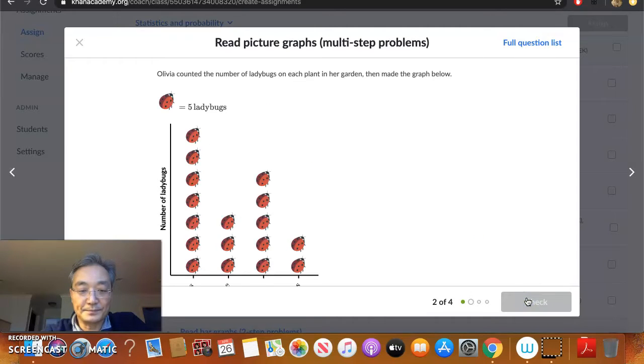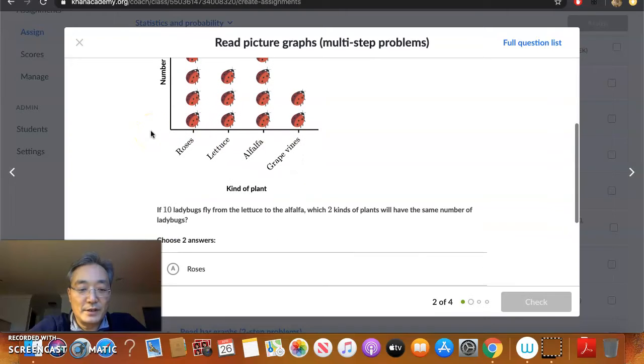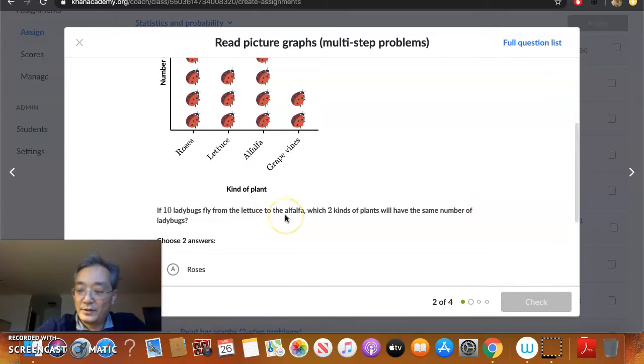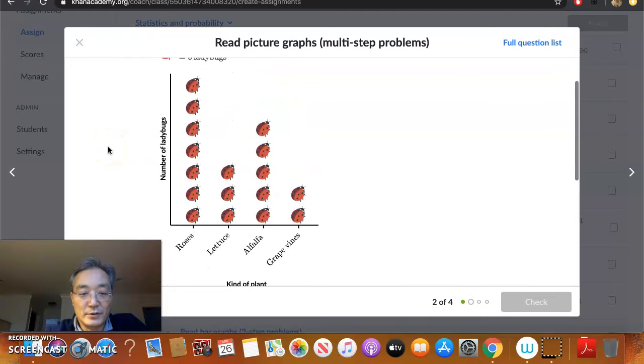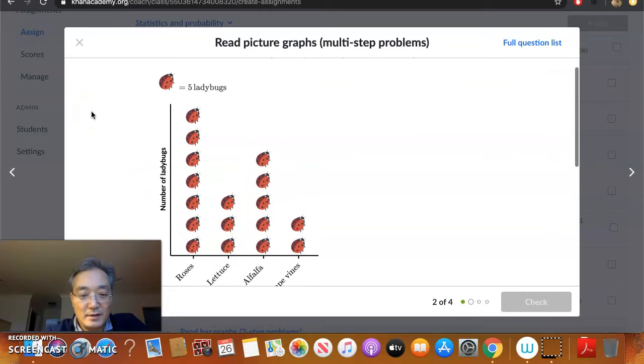Let's take a look at another one. Here, Olivia counted the number of ladybugs on each plant in her garden, then made the graph. Again, each picture represents five ladybugs. And the question is, if ten ladybugs fly from the lettuce to the alfalfa, which two kinds of plants will have the same number of ladybugs? If ten ladybugs fly from the lettuce to the alfalfa, so they're going from here to here.